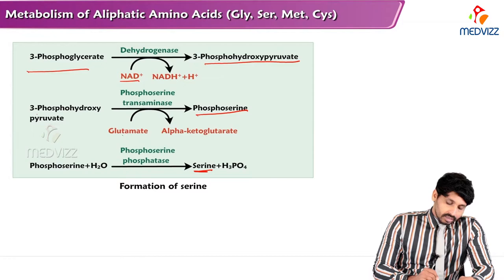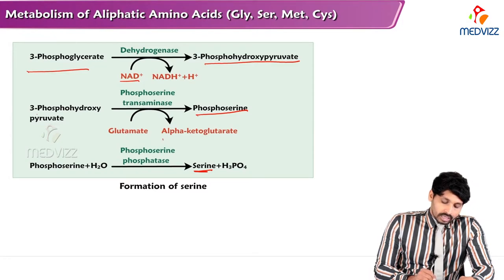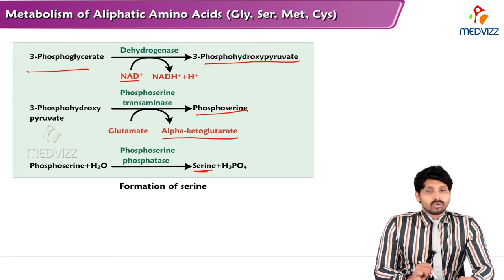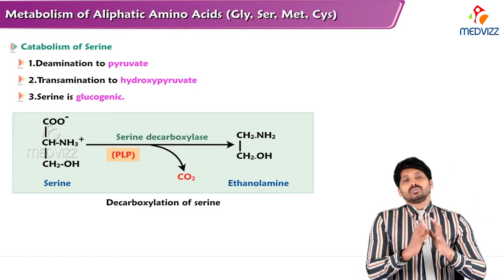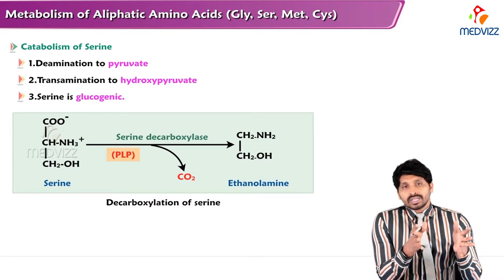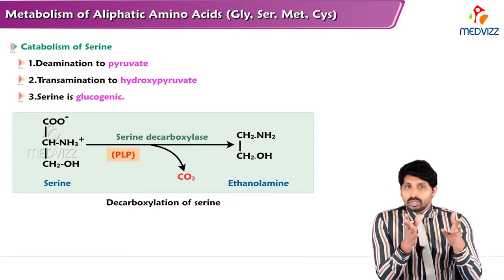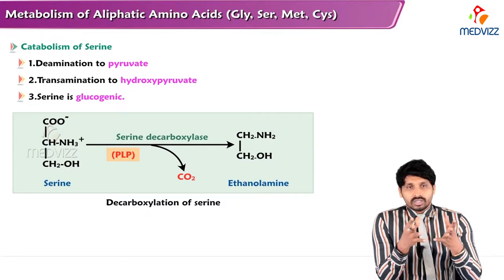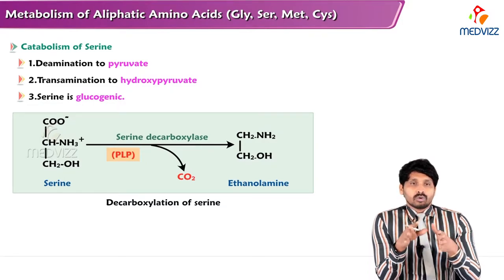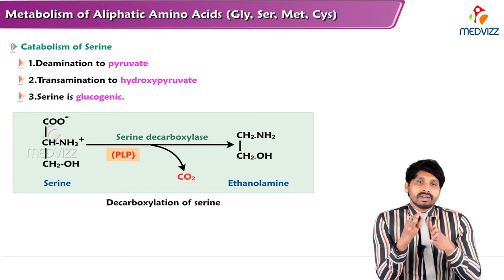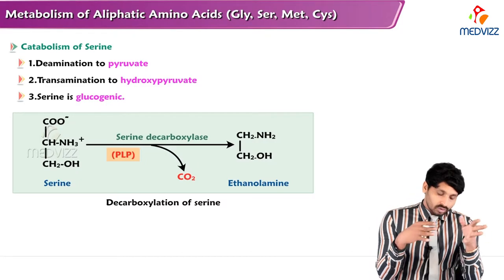Glutamate is the donor of the amino group and is converted into alpha-ketoglutarate. So we have seen the anabolism of serine — how serine is made in our body. Since serine is non-essential, like glycine, now we will see catabolism and how it is degraded in our body.